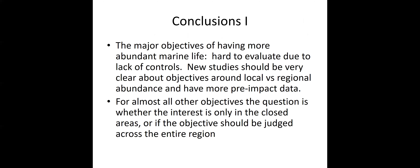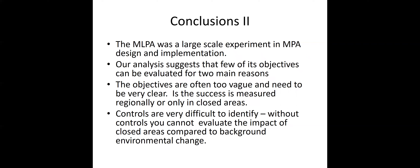In conclusion, the major objective of having more marine life is really hard to evaluate due to a lack of controls. New studies should be very clear about objectives around local versus regional abundance and should have more pre-impact data. For almost all the other objectives, the question is whether the interest is only in the closed areas or if the objective should be judged across the entire region. The MLPA was a large-scale experiment in MPA design and implementation. Our analysis suggests that few of its objectives could be evaluated for two reasons: the objectives are often too vague and need to be much clearer, and it's unclear whether success is measured regionally or only in closed areas. Perhaps the most difficult problem is controls — they are difficult to identify, and without controls you can't evaluate the impact of closed areas compared to background environmental change. Thank you very much.